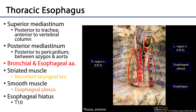As we move into this region of the posterior mediastinum, the esophagus is now smooth muscle, and that smooth muscle is going to be under autonomic control. The plexus which controls that smooth muscle is the esophageal plexus, which we'll talk about in greater detail.